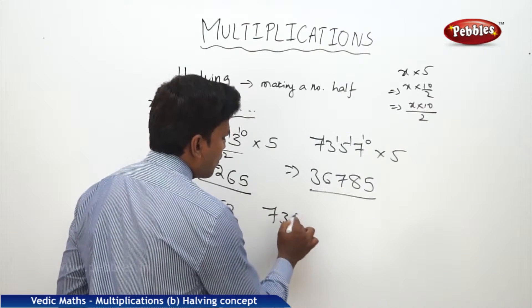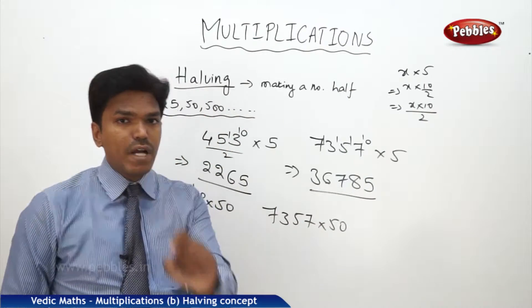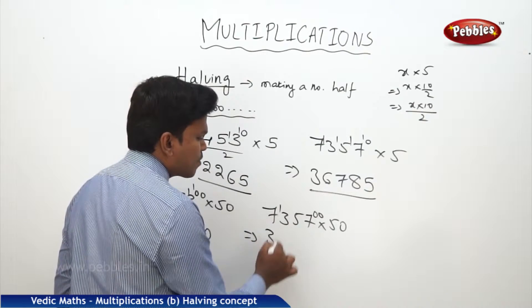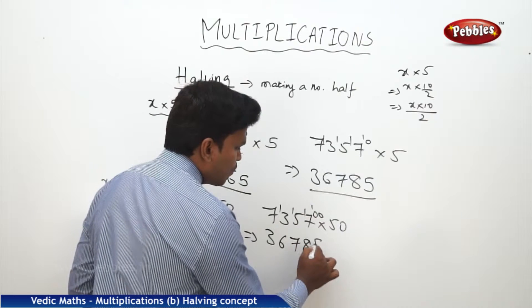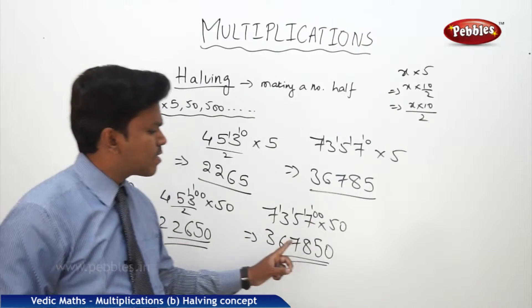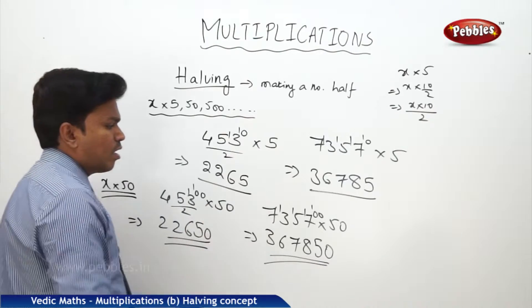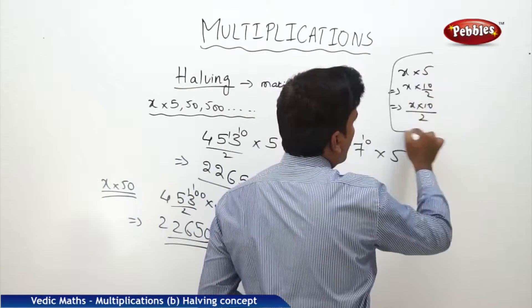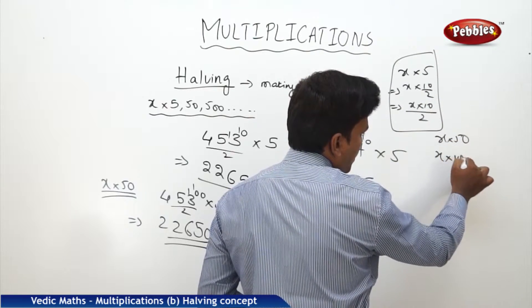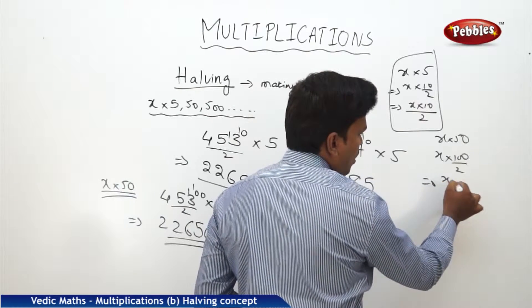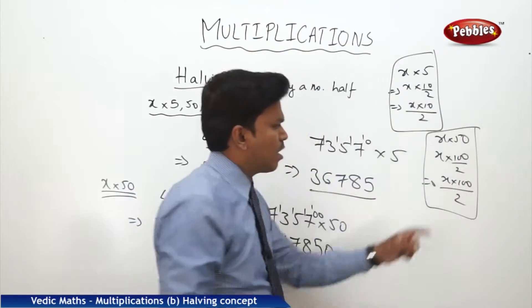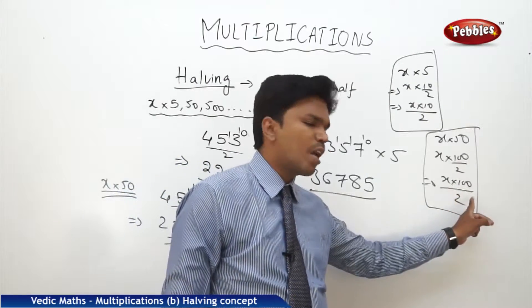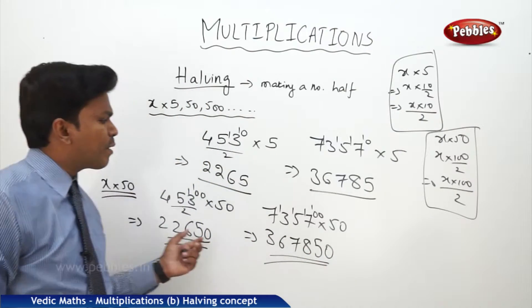For 7357 × 50, add two 0s at the end. After adding two 0s, make it half: 2 threes, 2 sixes, 2 sevens, 2 eights, 2 fives — drop that one extra 0 as it is. Answer is 367850. The logic: x × 50 = x × (100/2). So x × 100 means adding two 0s at the end, then divide by 2 — which is halving. That's how we can multiply a number by 50.